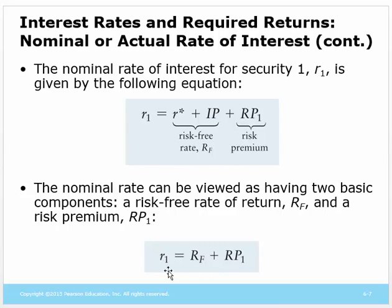The rate of return for any investment is the risk-free rate of return plus some risk premium. If an asset has no risk premium — that is, the risk premium is zero — then the return on that asset would be the risk-free rate of return. The risk-free rate is comprised of the real rate plus inflation. So if inflation increases, the risk-free rate increases, which means required returns or interest rates in general are going to increase.